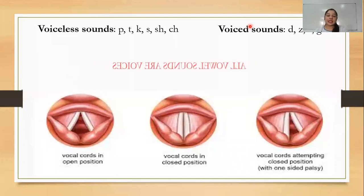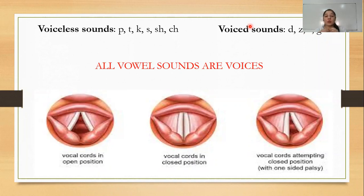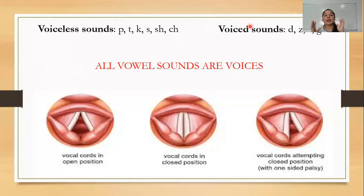All vowel sounds are voiced — they always have a voice. Whenever you say A, E, I, O, U, they are voiced. Vowels themselves have 20 sounds — these five vowels produce 20 sounds. We will discuss that later. So this is about our phonatory system.